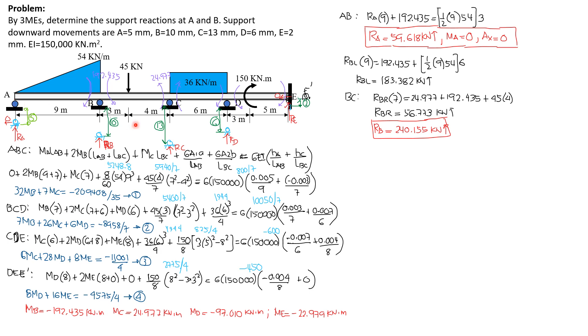We only expect moments at the interior support such as B, C, D, and E. So there are four unknowns here, the internal moments at B, C, D, and E.